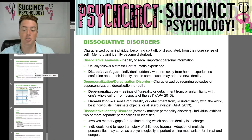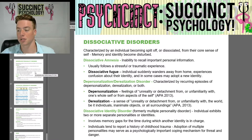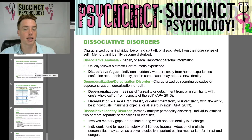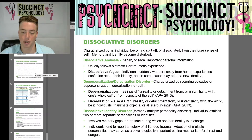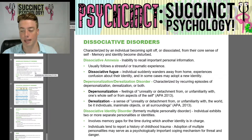Dissociative identity disorder, formerly called multiple personality disorder, is when an individual exhibits two or more separate personalities or identities. It involves memory gaps for the time during which another identity is in charge, and individuals tend to report a history of childhood trauma. Adoption of multiple personalities may serve as a psychologically important coping mechanism for threat and danger.